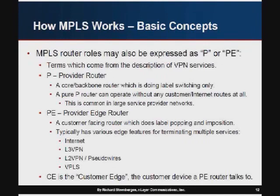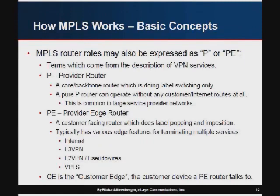Some MPLS roles are also expressed as P or PE, terms that come from VPN services. The P router — provider router — is the core router doing label switching, and a pure P router can operate without any customer or Internet routes at all, purely switching on MPLS. The PE router — provider edge router — handles encapsulation and popping at both ends of the LSP, performing services like Internet, L2 VPNs, L3 VPNs, pseudowires, and VPLS. The CE is the customer edge router that touches the PE, and you'll see CE/PE/P in diagrams describing VPN services.